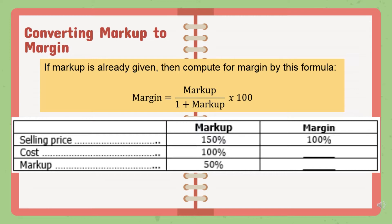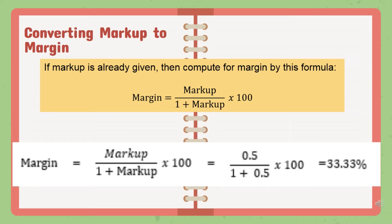Given the first example, for selling price, cost, and markup in terms of what portion each represents: the selling price is 150%, the cost is 100%, and the markup is 50%. Cost plus markup equals selling price, so 100 plus 50 gives 150 as the selling price. In comparison, for margin, we treat the selling price as 100%, because margin is the same as markup percentage based on selling price, so cost and markup share portions from that 100% base.